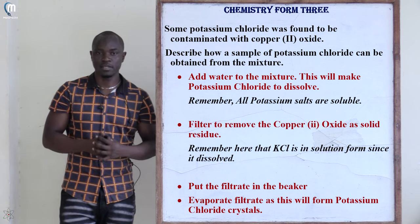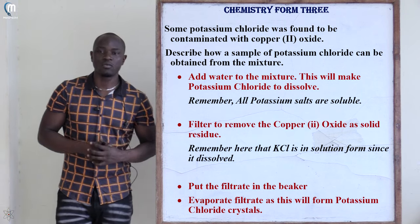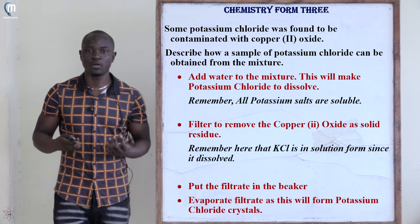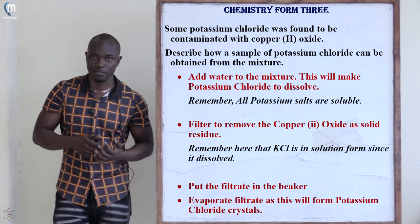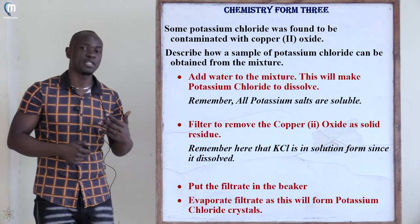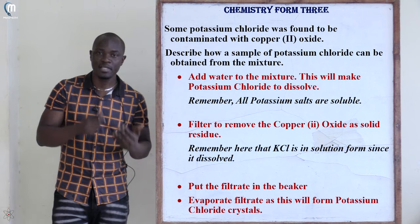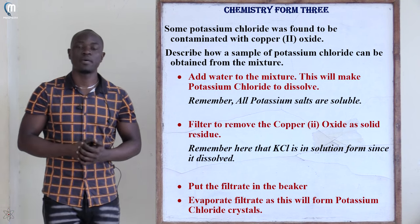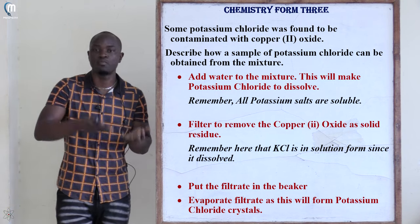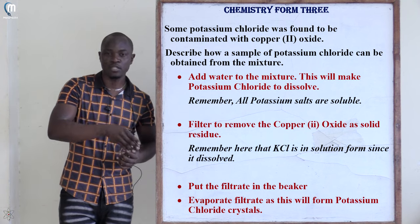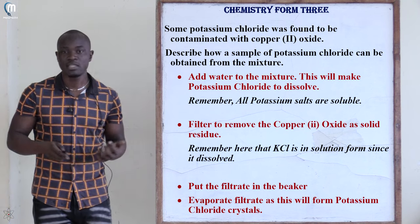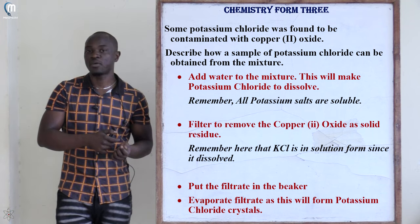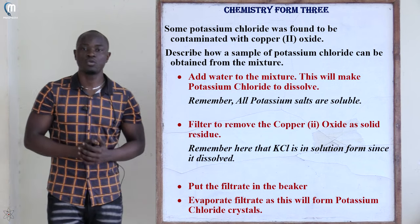The next question states: some potassium chloride was contaminated with copper(II) oxide. Describe an experiment to show how potassium chloride can be obtained from the mixture. This question is also testing on the solubility of salts — if you know solubility rules, you are good to go.